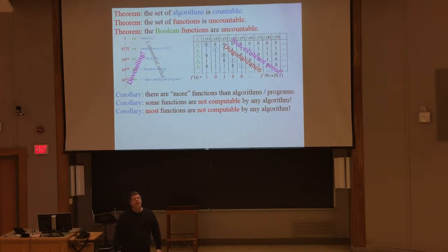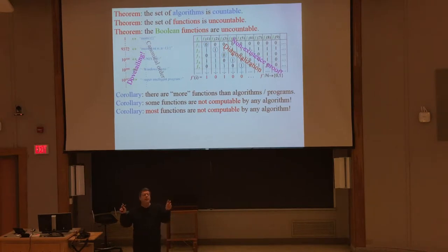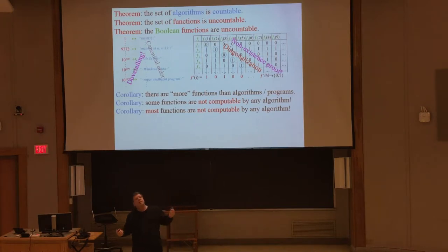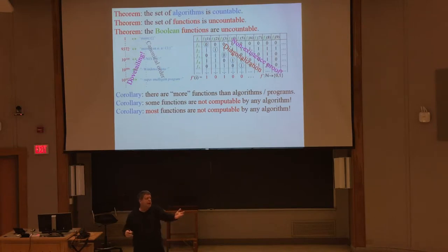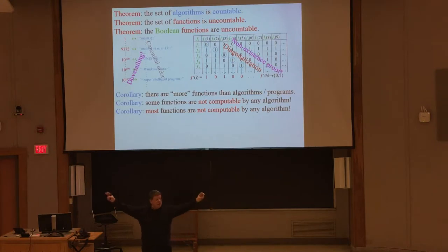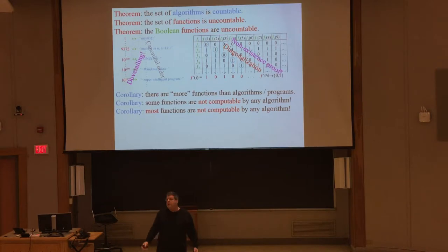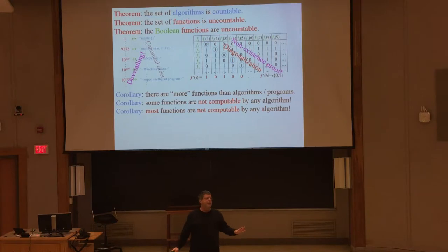Algorithms must have a finite length — they can be represented as a string. That includes English descriptions, code, pseudocode, even a video with hand-waving: take all the bits of all the frames of the video, string them end to end, and that's one big string. So an algorithm could be a lot of different things, but there's a finite number of them because an algorithm has to have an end to its description. If you don't finish describing the algorithm, you haven't described it yet.